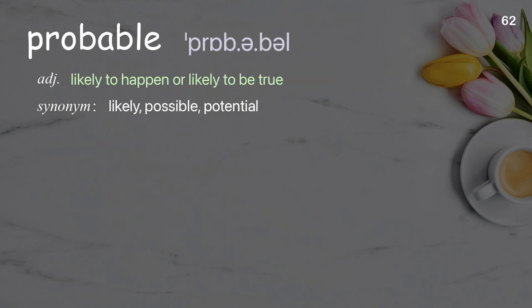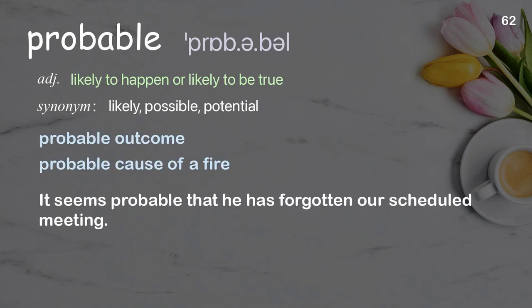Probable: likely to happen or likely to be true. Examples: probable outcome, probable cause of a fire. It seems probable that he has forgotten our scheduled meeting.